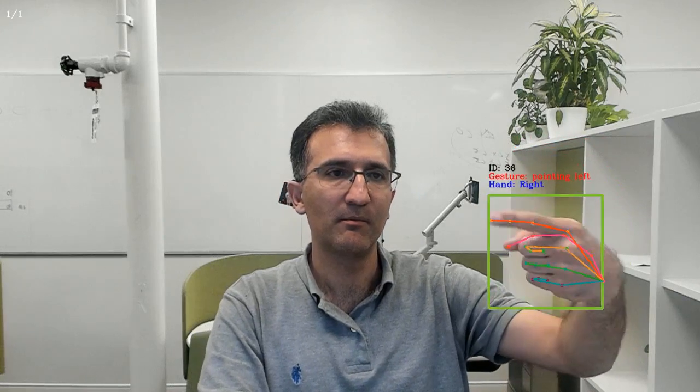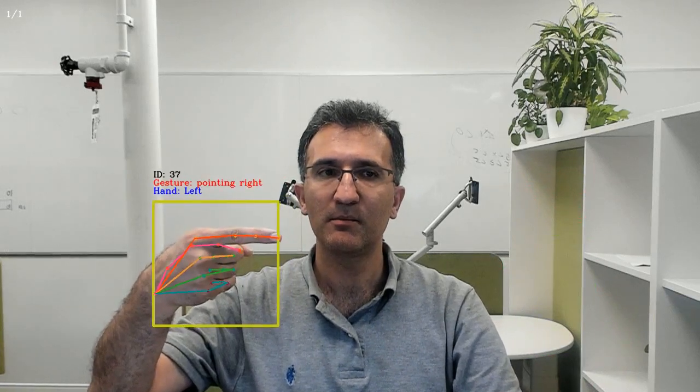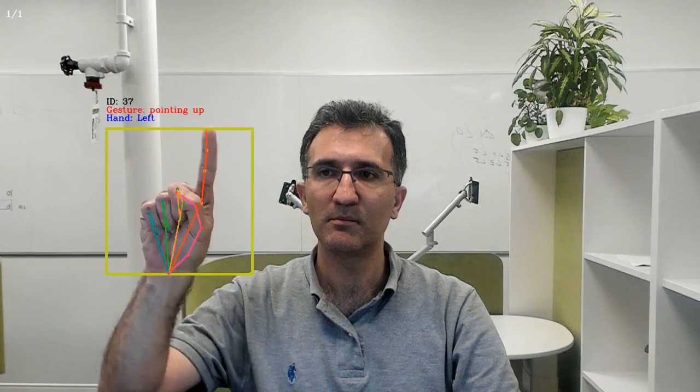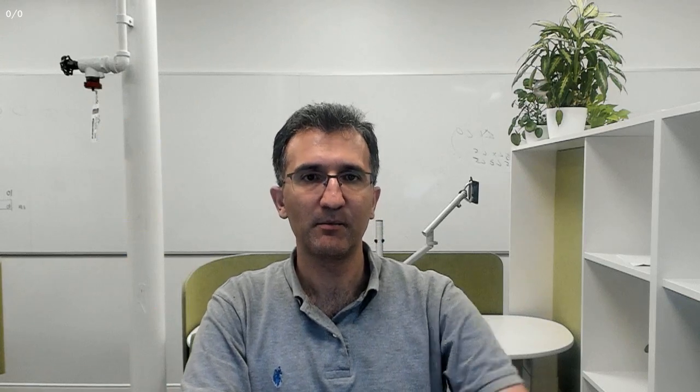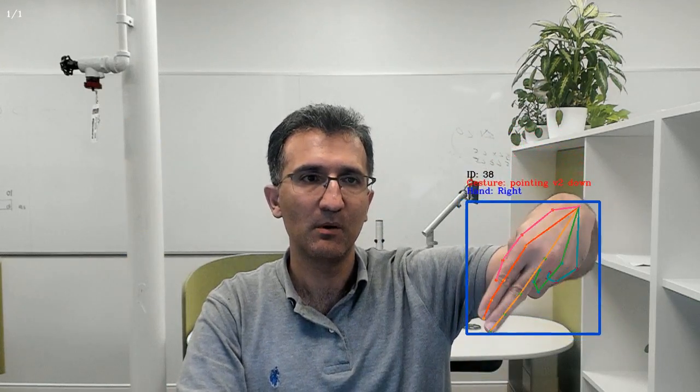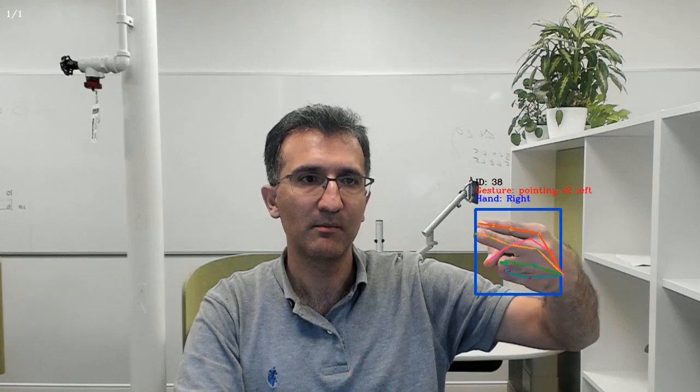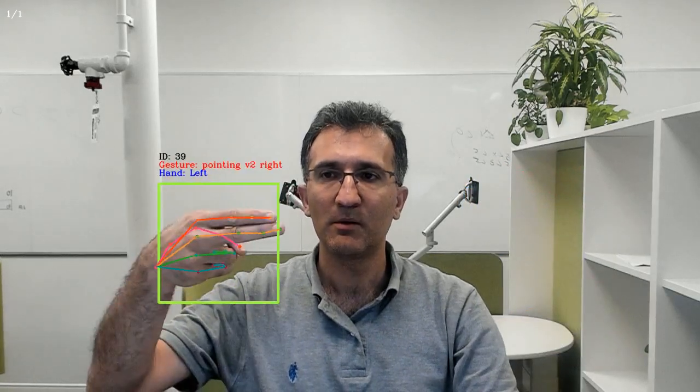So open, half, and close. Here is gesture pointing down, and pointing left. And here is pointing right, and pointing up. Here is pointing version 2 with two fingers: down, left, right, and up.